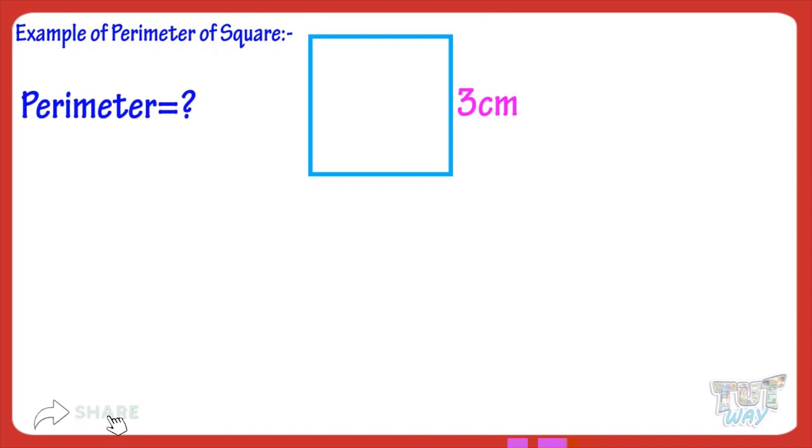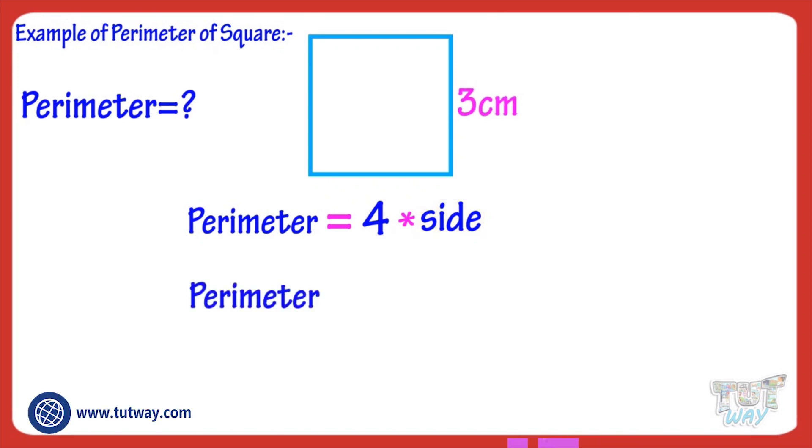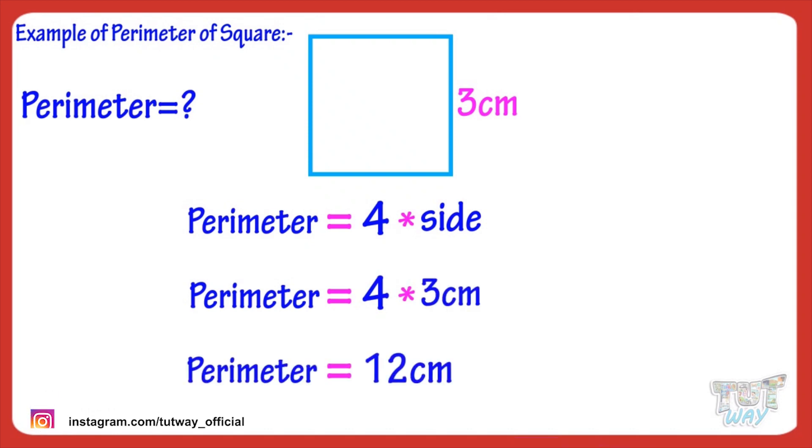We know perimeter equals 4 multiplied with side. And here the side is 3 cm. So, perimeter equals 4 multiplied by 3 equals 12 cm.